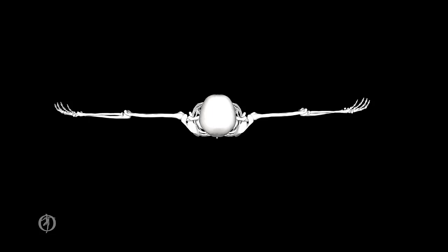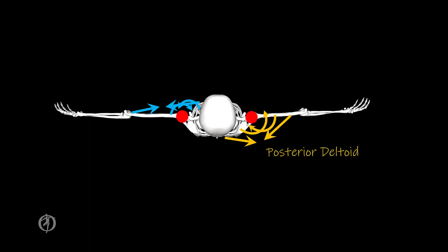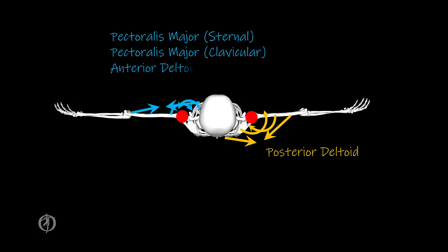Now let's also look at motions in the transverse plane of horizontal abduction and adduction, or horizontal flexion and extension. We have a longitudinal axis that goes through the humeral head. Any force vector that passes posterior to that will create a torque that will horizontally abduct or horizontally extend the glenohumeral joint, while any MTCs that have a force vector that is anterior to this axis of rotation will create a torque that will horizontally flex or horizontally adduct the glenohumeral joint. The major muscle for horizontal abduction is the posterior deltoid, while those for horizontal adduction include the pectoralis major sternal portion, the pectoralis major clavicular portion, and the anterior deltoid.